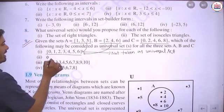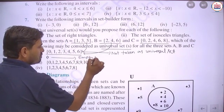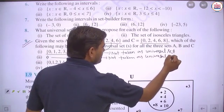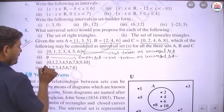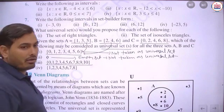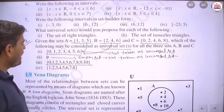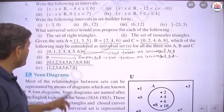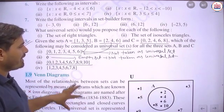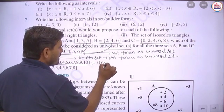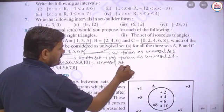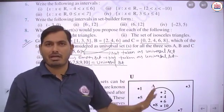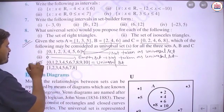Option 3 is {0,1,2,3,4,5,6,7,8,9,10} — checking: all elements of A (1,3,5), B (2,4,6), and C (0,2,4,6,8) are present. So this qualifies as the universal set. Option 4 is {1,2,3,4,5,6,7,8} — element 0 from set C is missing here. So option 3, {0,1,2,3,4,5,6,7,8,9,10}, is the correct universal set.